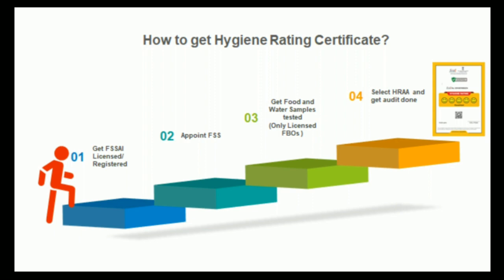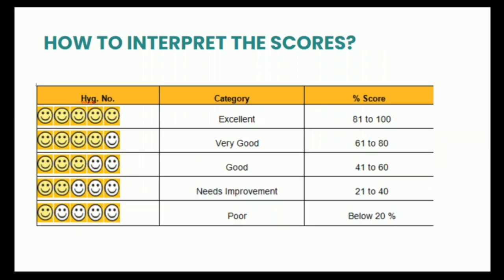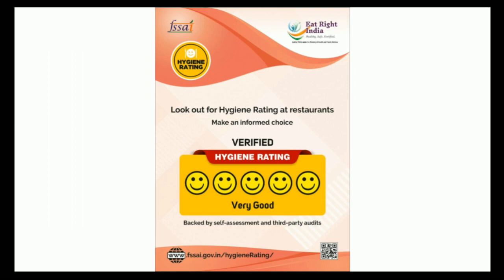The HRAA — Hygiene Rating Audit Agency — will audit the food business premises, the quality of food, and the hygienic standards of the premise. After that, they will give a rating. The rating is represented through various smileys: excellent gets five smileys, very good gets four, good gets three, needs improvement gets two, and poor gets one. This helps consumers get an idea about the quality and hygienic standards of a particular food premise, helping them make better choices. It also encourages food business operators to improve their safety standards by increasing their rating.